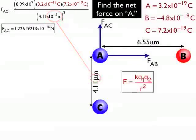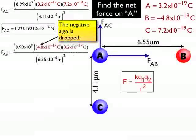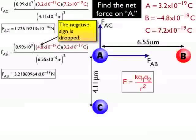I'll do the same process for the forces between A and B. Coulomb's constant, but notice that I dropped the negative sign. It just became 4.8 times 10 to the negative 19 Coulombs, times 3.2 times 10 to the negative 19 Coulombs. No negative sign, because I just need the magnitude of the forces between them. And of course, divided by the distance, 6.55, my mu symbol, 10 to the minus 6. And that gives me an answer of 3.2186 times 10 to the negative 17 newtons.